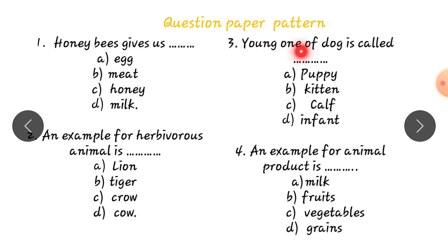Third one. Young one of dog is called. Young one and the baby. Baby of dog is called. Puppy, kitten, calf, infant. Correct option is puppy. So, select the option A.